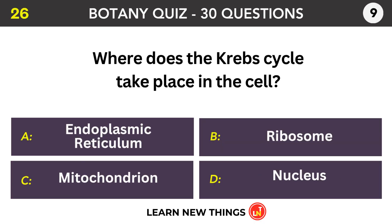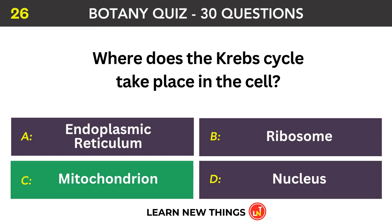Where does the Krebs cycle take place in the cell? Mitochondria.